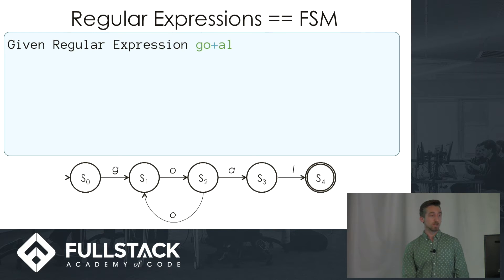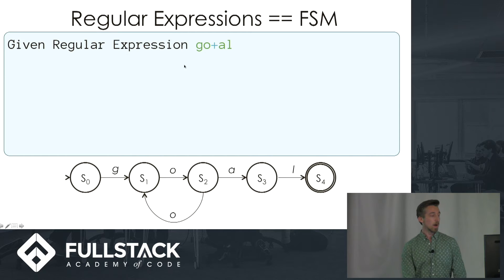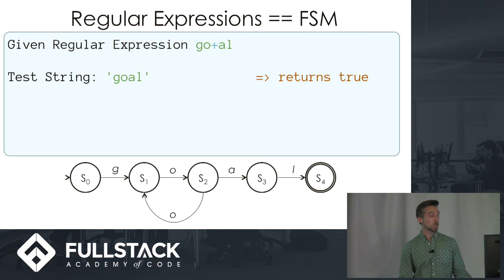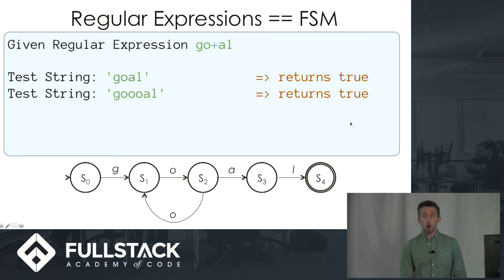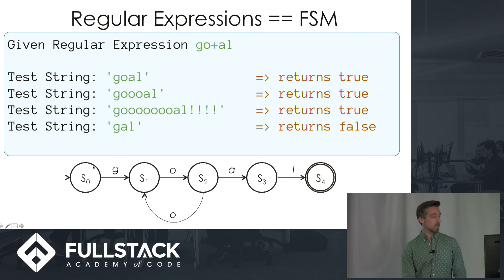So what does it mean that a regular expression is a finite state machine? Let's walk through an example. We've got the regular expression GO+AL, which is the convention for matching one or more of the previous character. We start at an initial state S0, and if we get a G we move to the next state. If we get an O we move to the next state after that, and since we indicated plus, we can continue to loop through states until we reach an A, which moves us forward until finally, if we match all the characters, we reach the final state S4 — meaning we've found a match. The test string 'goal' returns true because we move through each character from state 0 to state 4. 'Goool' also returns true. 'Gal' does not return true because we never make it from state 1 across into state 2. The same goes for 'goat'.